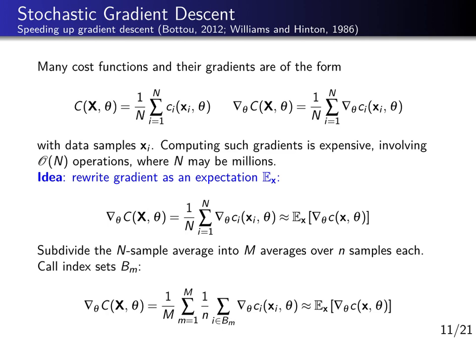Since we are using expectation values of the gradient to define every parameter update, we can change how this expectation is computed — for example, by computing it over a smaller set of samples. The gradient of the full training set can be rewritten as M sums over gradients of batches, each with batch size n. We can then redefine what an iteration is: instead of one iteration for the full dataset, we do an iteration for every batch, computing the gradient from a single mini-batch, updating parameters, then moving to the next batch.